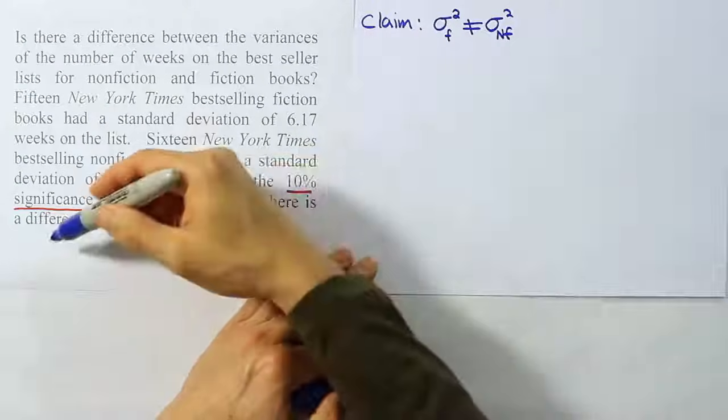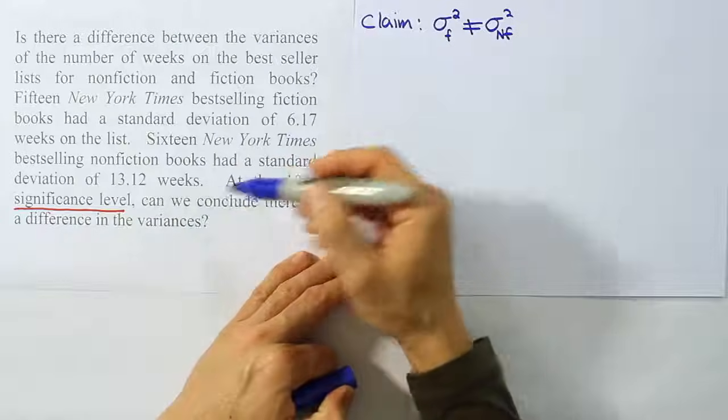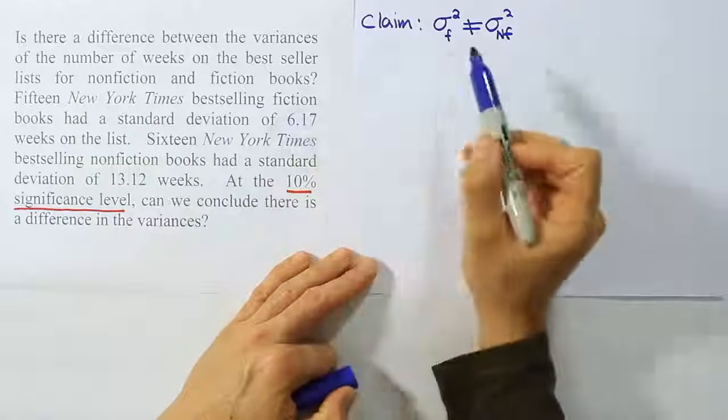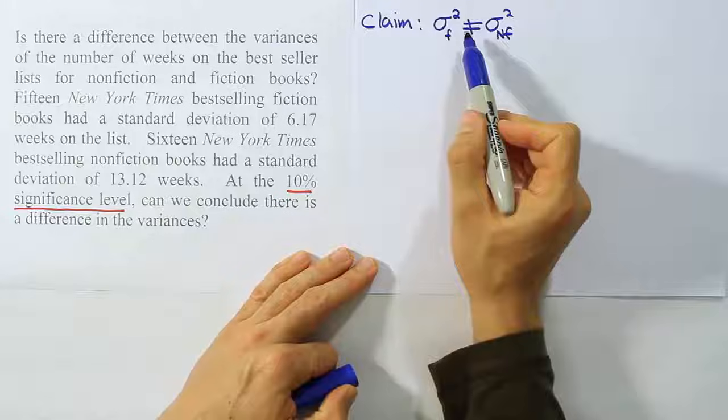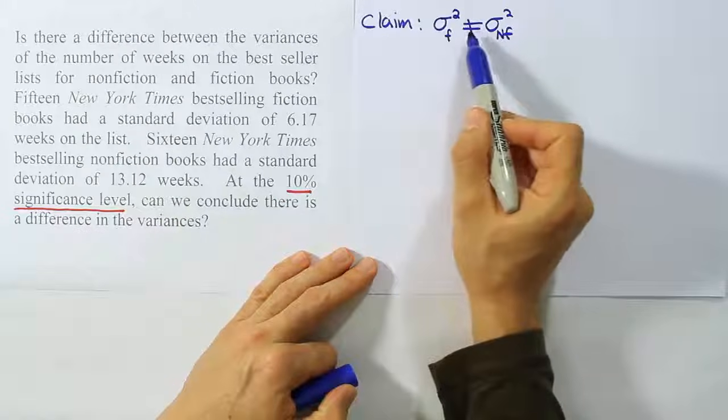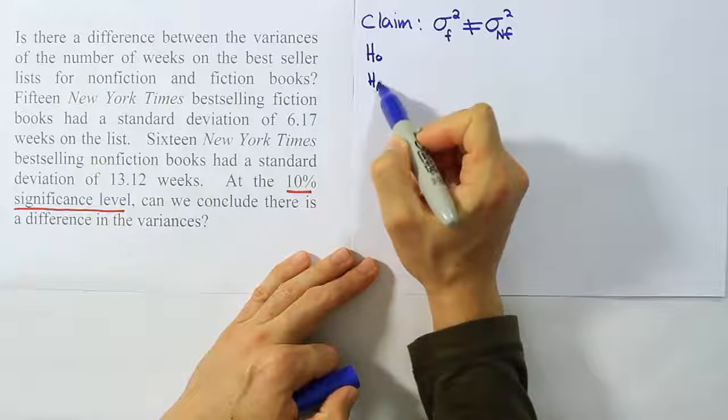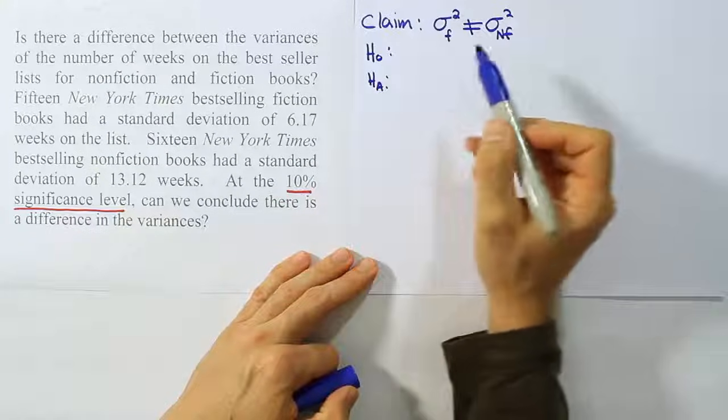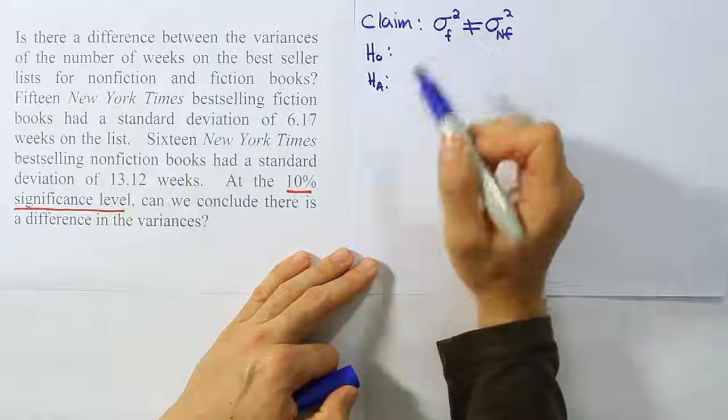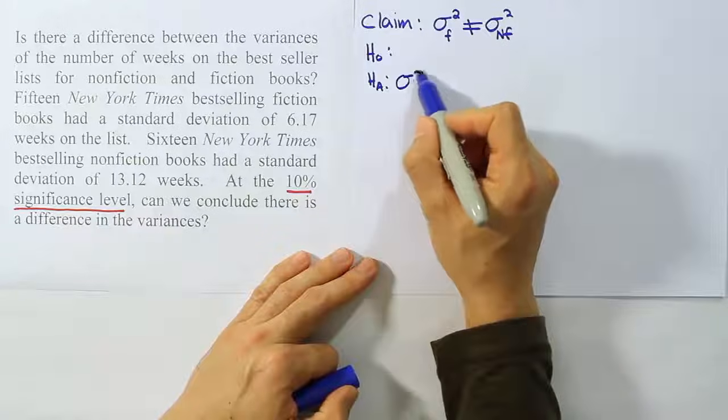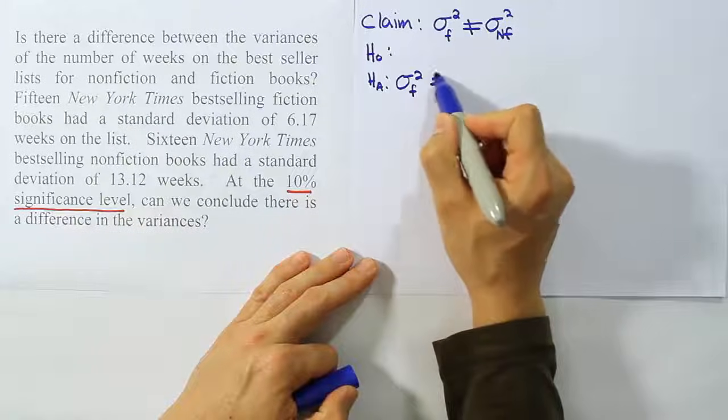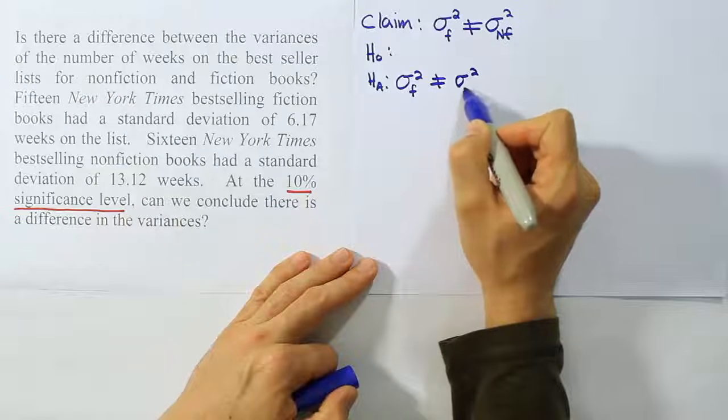Again, it says the differences in the variances. Can we conclude there is a difference in the variances? This shows that there is a difference. It doesn't say one is greater than the other, it just says that they're not the same. Now from there, we'll do H₀ and Hₐ. Because of this not equal to sign, the claim and Hₐ are the same. So I'll do sigma squared for fiction is not equal to sigma squared for non-fiction here.